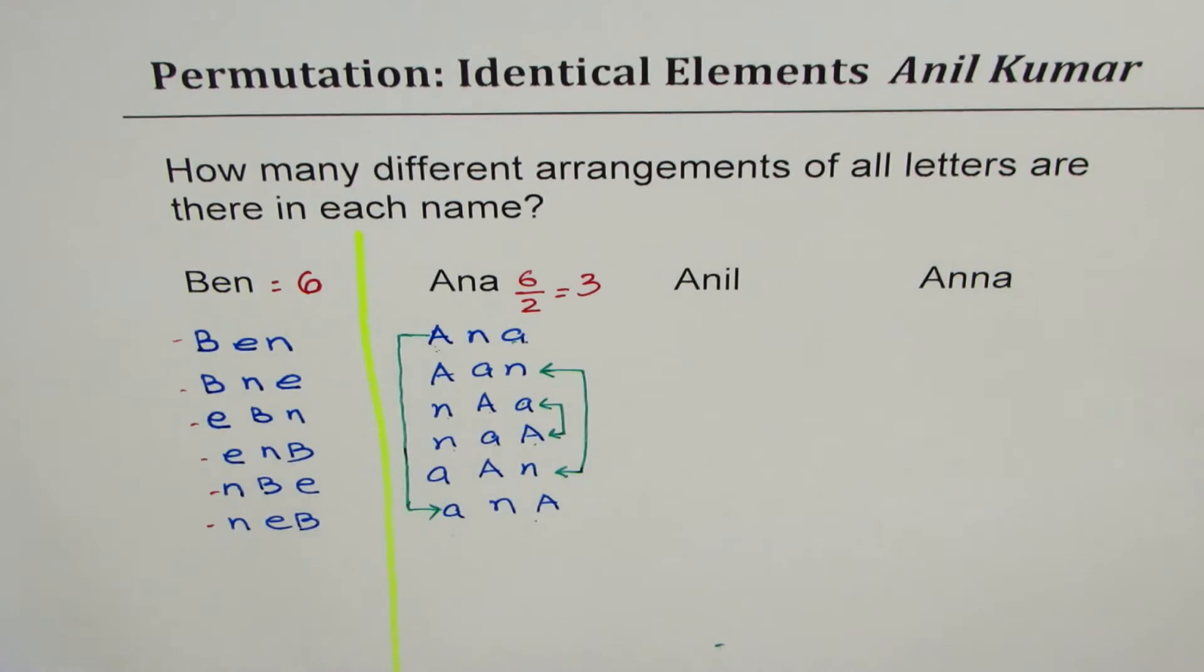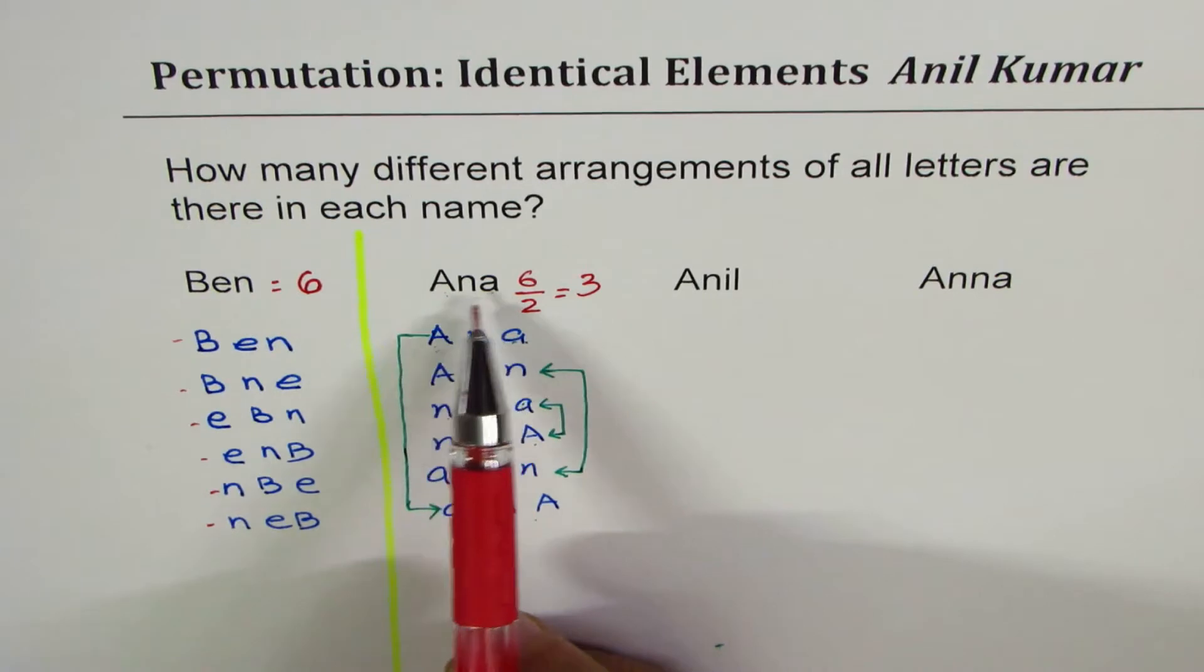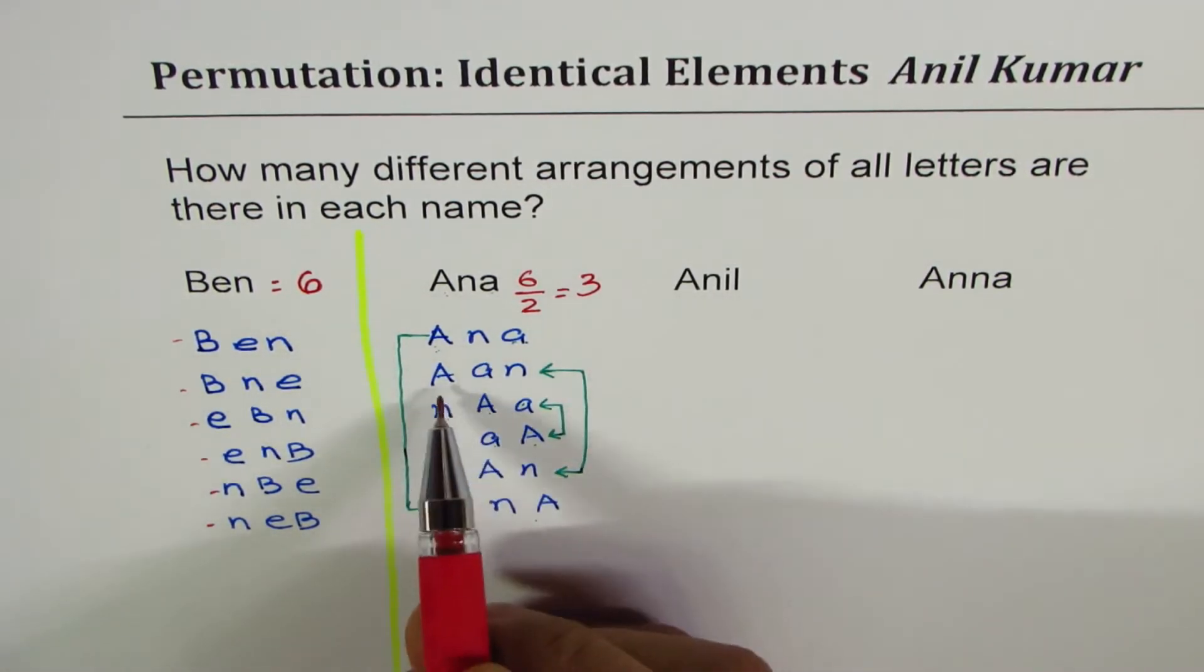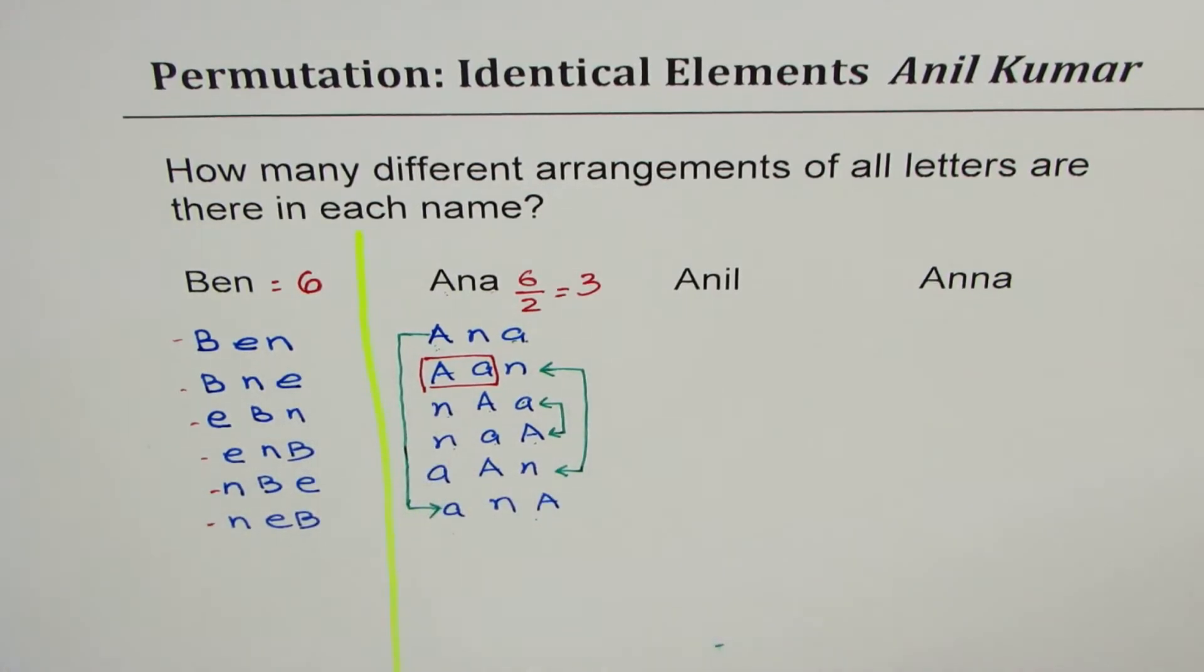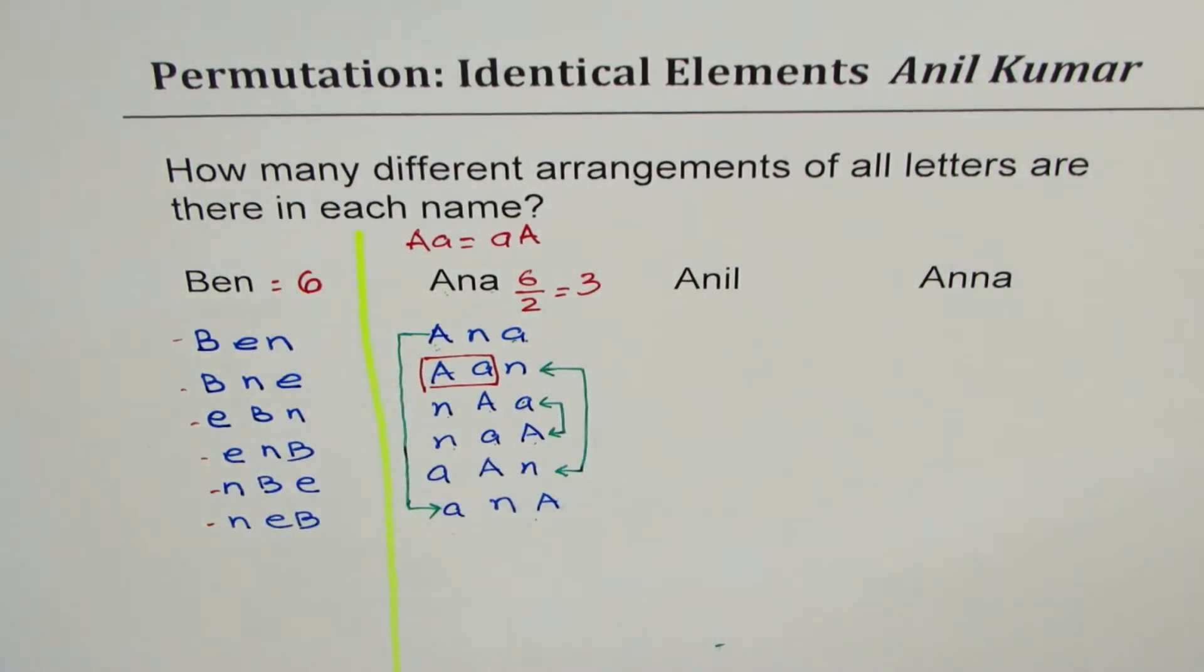So effectively, this time we have six divided by two or three different arrangements with the word A and A. Clearly, you have seen there is repetition of A, two identical letters. We call them identical objects at times. If in the letters we have all three different, we have six, but in case we have two same, then it is six divided by two. The reason is that the number of combinations we are making with AA is kind of same.